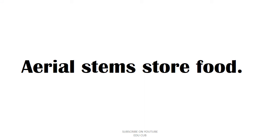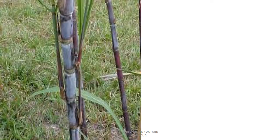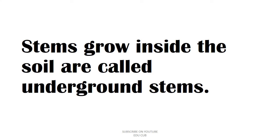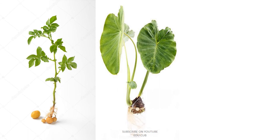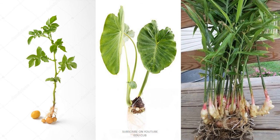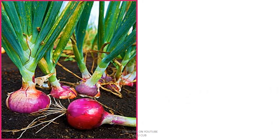Some aerial stems store food — examples include sugarcane and kittul. Stems that grow inside the soil are called underground stems. Although most stems grow above the soil, some plants have stems that grow inside the soil. Examples of underground stems include potato, ginger, onion, and leeks.